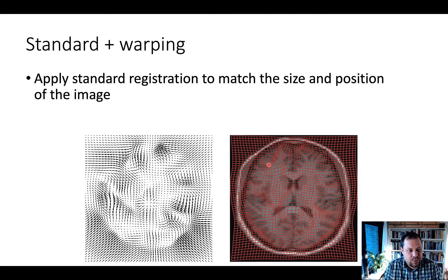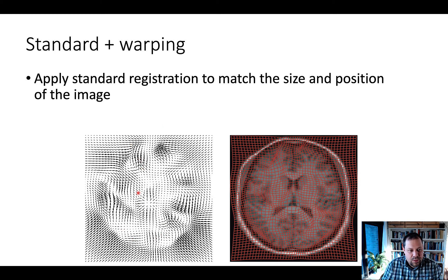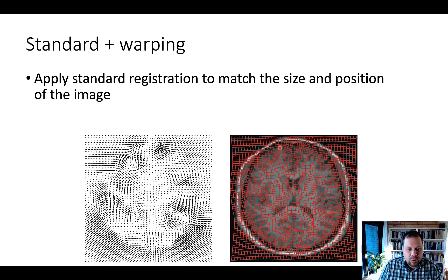It's a pretty fancy approach where we basically try to match the size and position of our T1 image to that of multiple template images, leading to this kind of warping. Each arrow indicates the direction in which the original image was warped to match the standard image, and this warping is applied to each voxel in the 2D slice and done for the entire brain volume, leading to a normalized image.